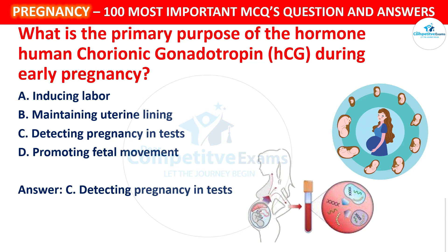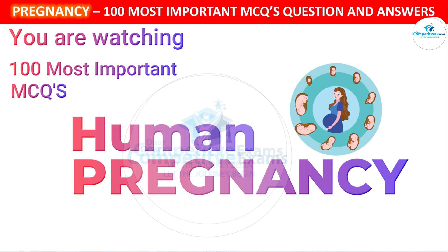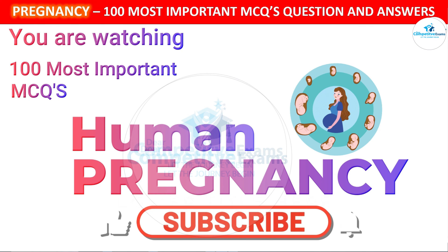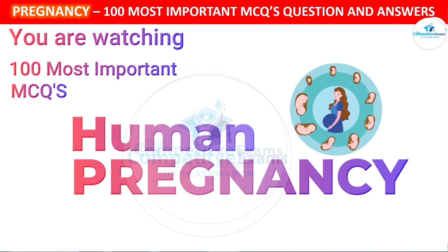HCG is primarily responsible for detecting pregnancy in a test, as its levels rise during early pregnancy. Friends, comment your score — out of 25, what did you get? If you found this video helpful, please support us by liking, subscribing, and sharing our channel. We'll see you with the third part of this video, uploaded the day after tomorrow. Keep watching, and visit our channel for more medical knowledge. Thank you and good luck for your exams.